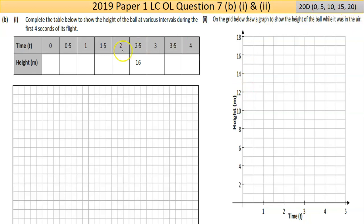Now part B, part 1 here, it's a huge chunk of marks, and it seems to be part 1 and 2 are marked together. So there's 20 marks. Part 1 says complete the table below to show the height of the ball at various intervals during the first four seconds of its flight. They give you different breakdowns, 0, 0.5 seconds, 1 second, etc.